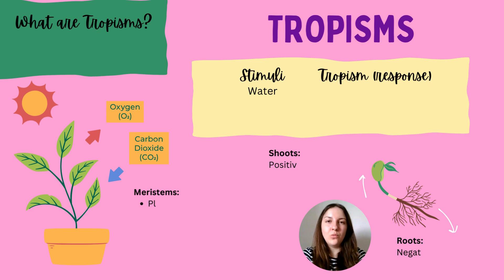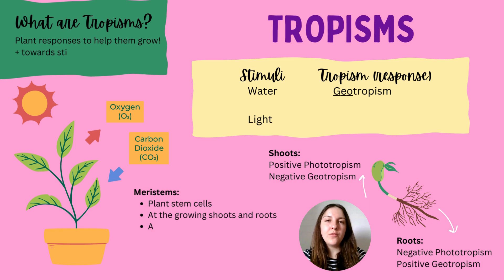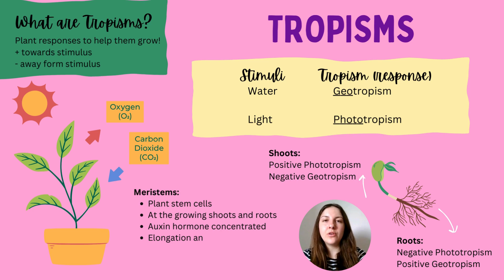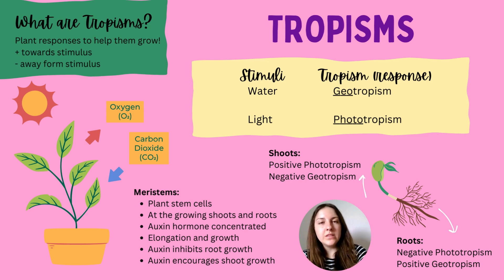To survive, plants require light, water, and CO₂ for photosynthesis. CO₂ is absorbed through the stomata. Plants have developed responses called tropisms that help them grow towards sources of water and light. A tropism is a response to a stimulus — a positive tropism means growing towards the stimulus, a negative tropism means growing away from it — and these help plants grow and survive.